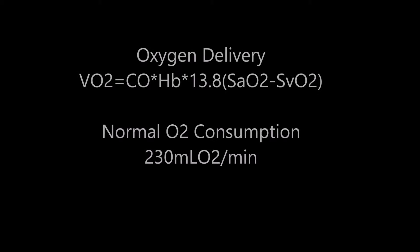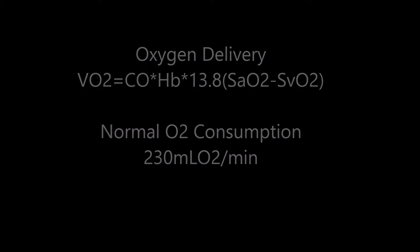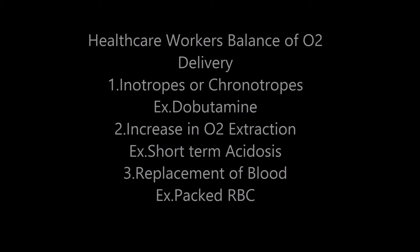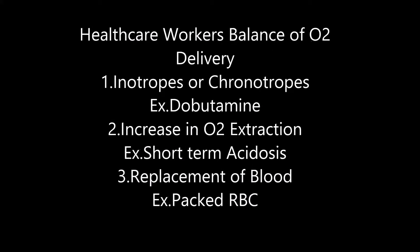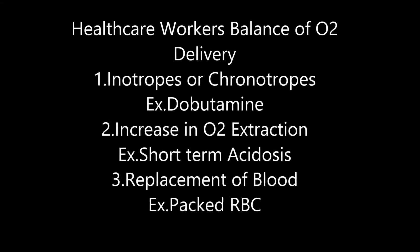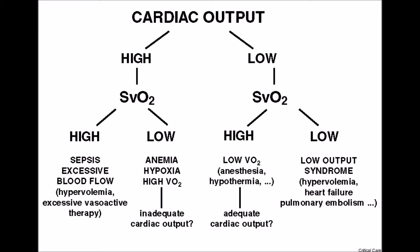Normal O2 consumption is 230 mL of O2 per minute. Looking at delivery: if your cardiac output is low, you may need to increase saturation of oxygen or give a higher FiO2 to compensate. If your SVO2 is high, you need to increase your cardiac output — it just works by balancing this equation.